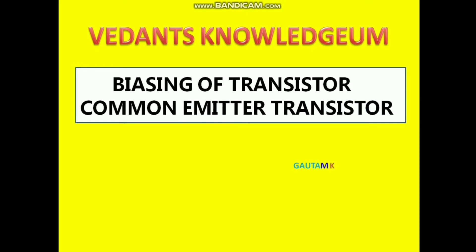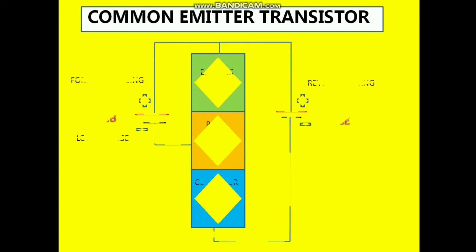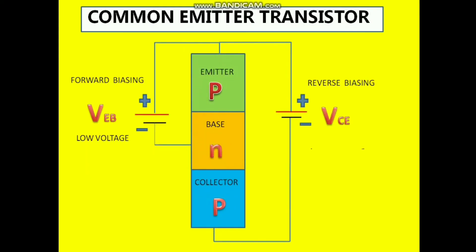Today we are going to discuss the common emitter transistor. When I say common emitter transistor, it's quite clear that the emitter terminal should be common to both the base and the collector. When I say emitter terminal is common, it means the emitter terminal should be provided to base as well as to the collector.